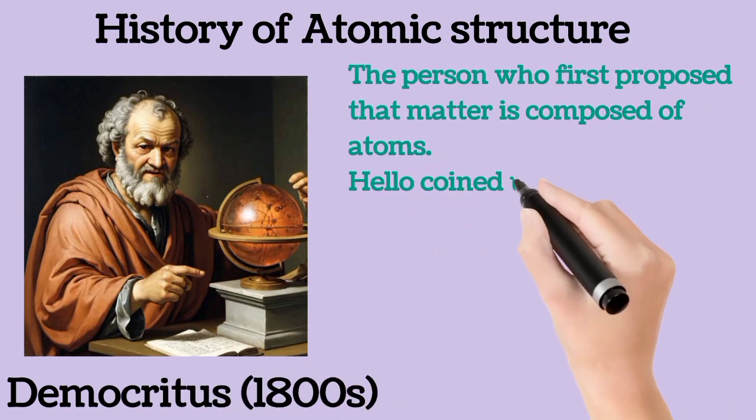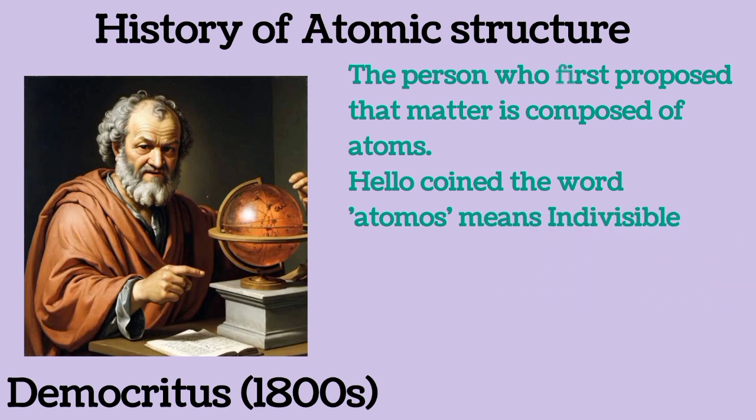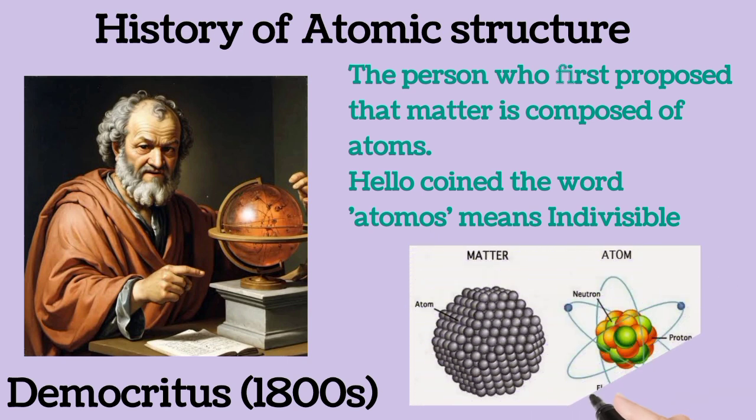The history of atomic structure started in the early ages with a philosopher called Democritus. Democritus was the first person to propose that matter is composed of atoms. He also coined the word 'atomos,' meaning indivisible. According to Democritus, everything we know on Earth — humans, stones, and all matter — is made up of atoms.